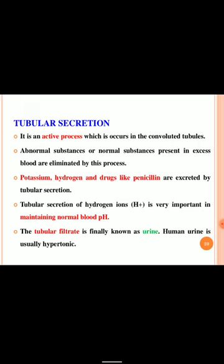Tubular secretion is an active process occurring in the convoluted tubules. Abnormal substances or normal substances present in excess in the blood are eliminated by this process. Potassium, hydrogen and drugs like penicillin are excreted by tubular secretion. Tubular secretion of hydrogen ions is very important in maintaining the normal pH of the blood. The tubular filtrate is finally known as urine, which is hypertonic in nature.